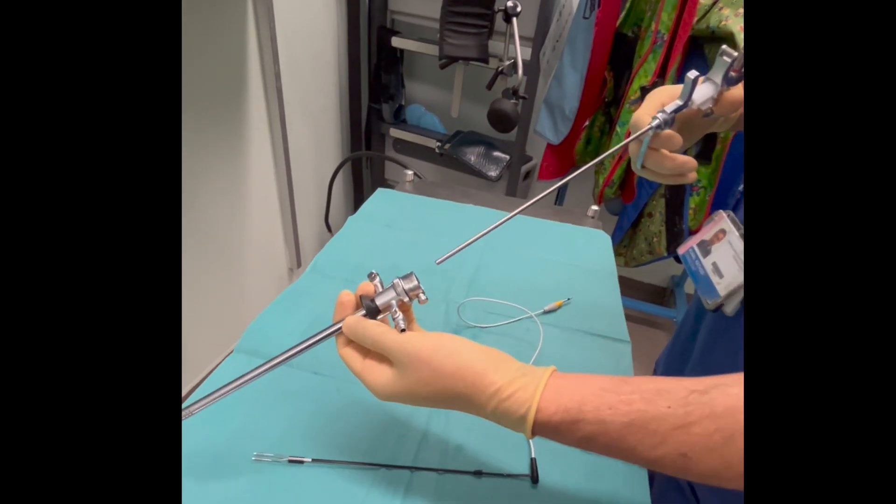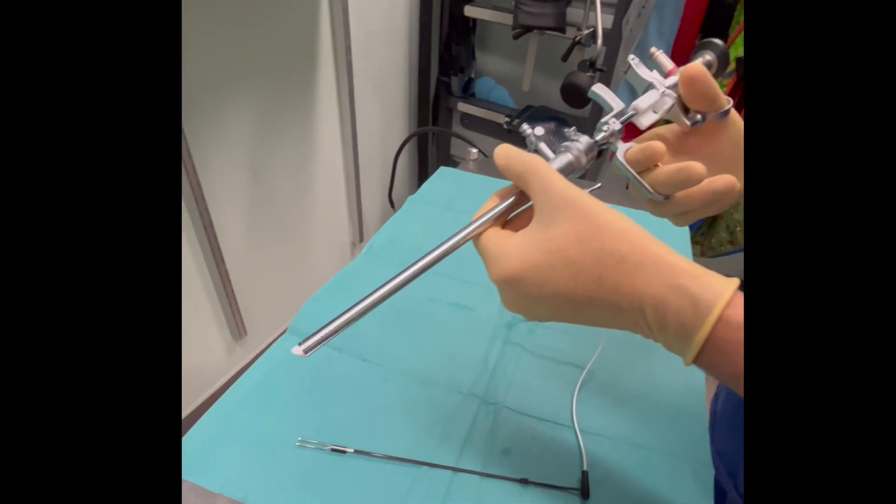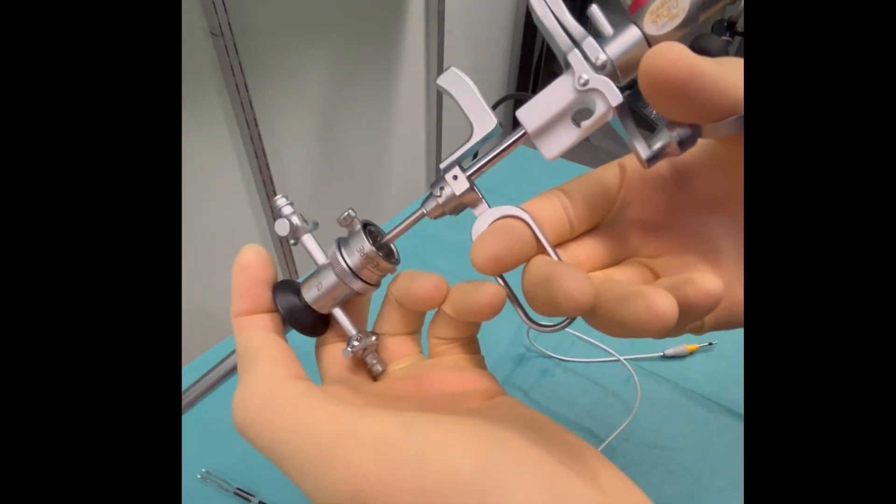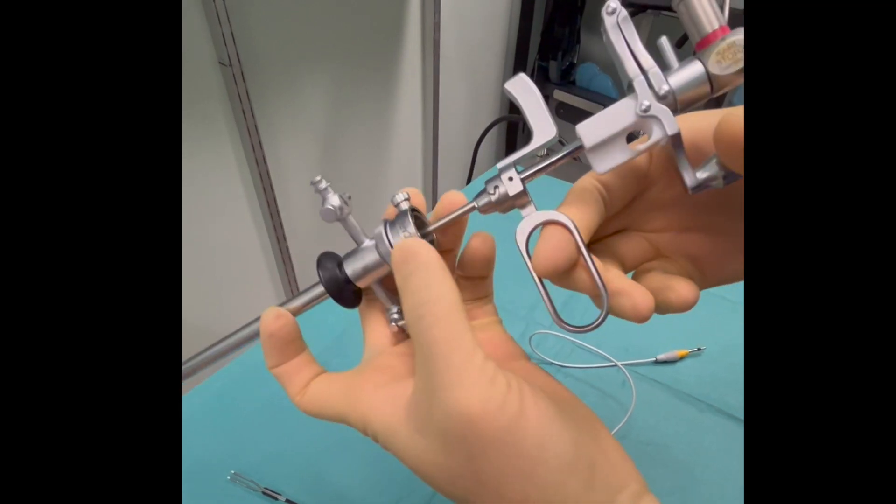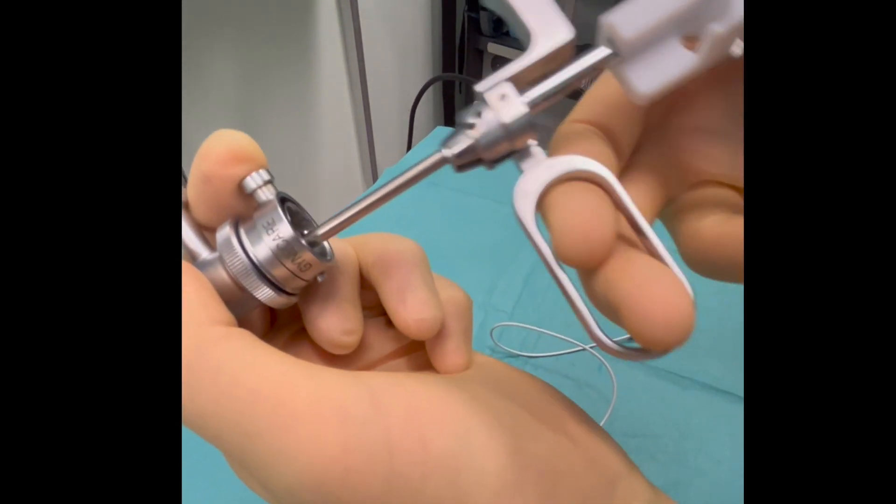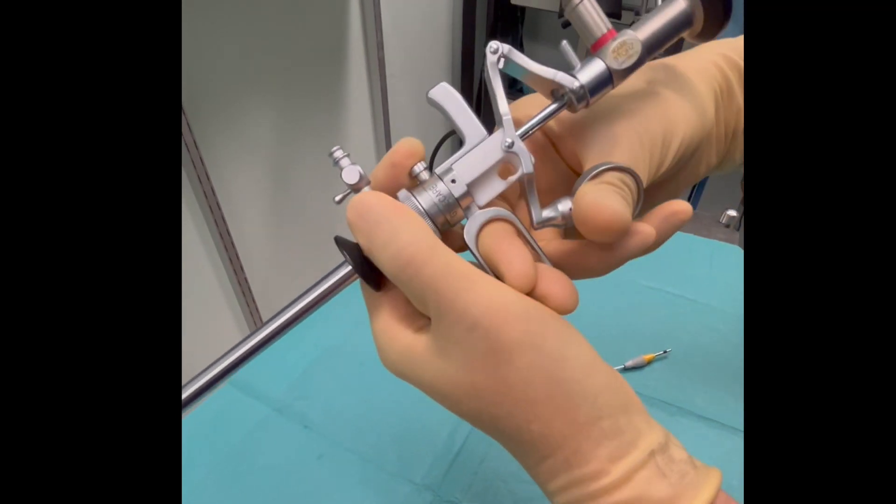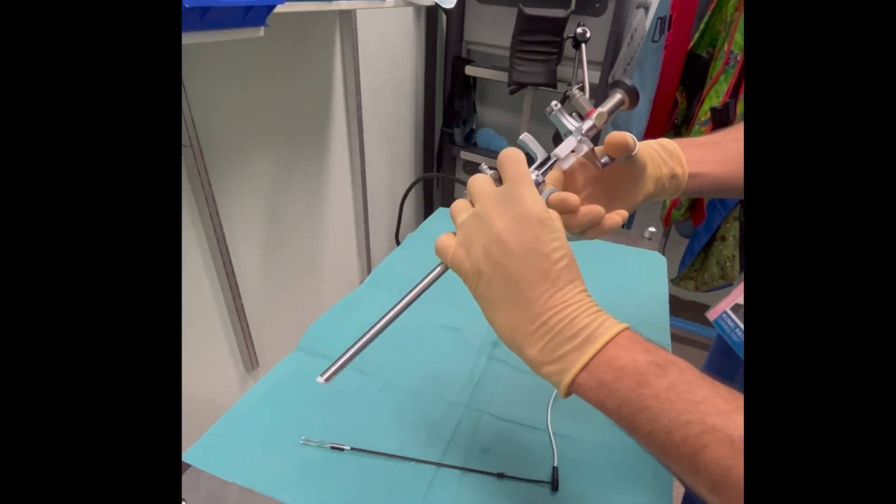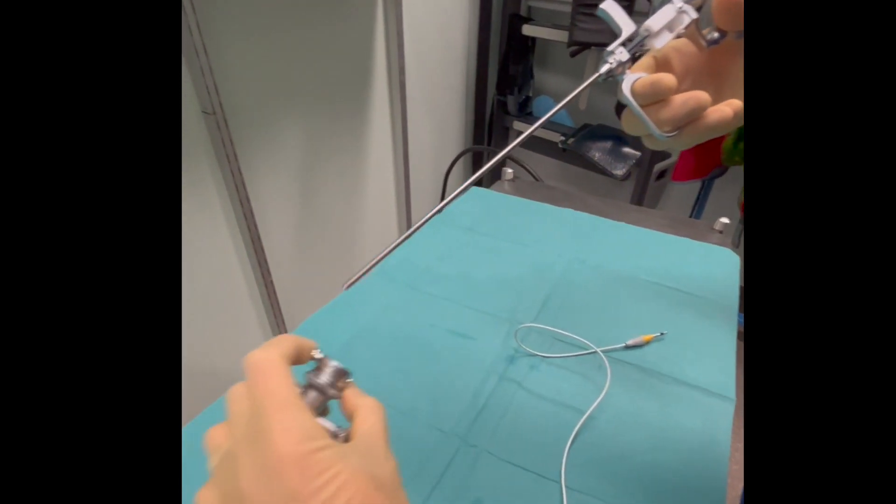Following which, the entire telescope is inserted into the flute channel. There is a simple button; on pressing it, it gets locked. We confirm that the system is correctly locked without any loose attachments to prevent any water leakage during the procedure.